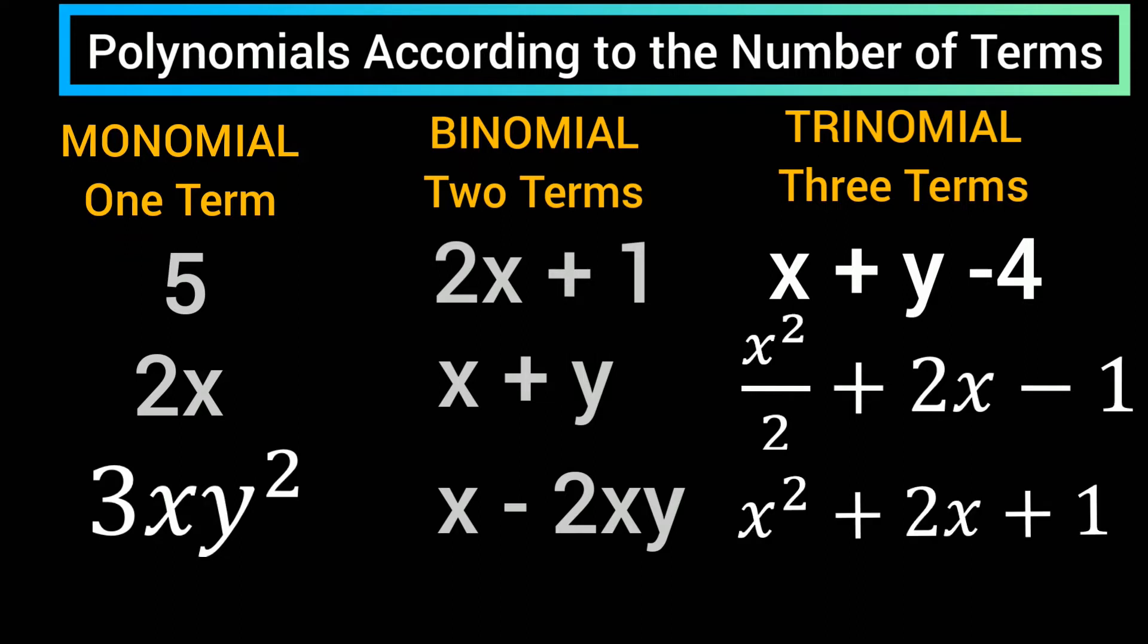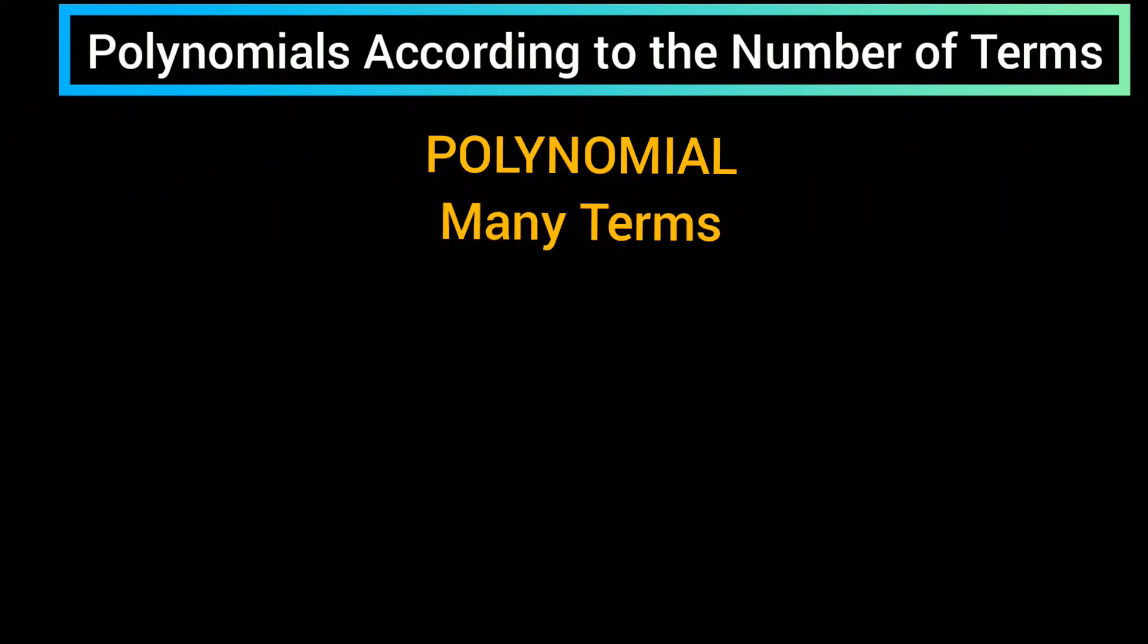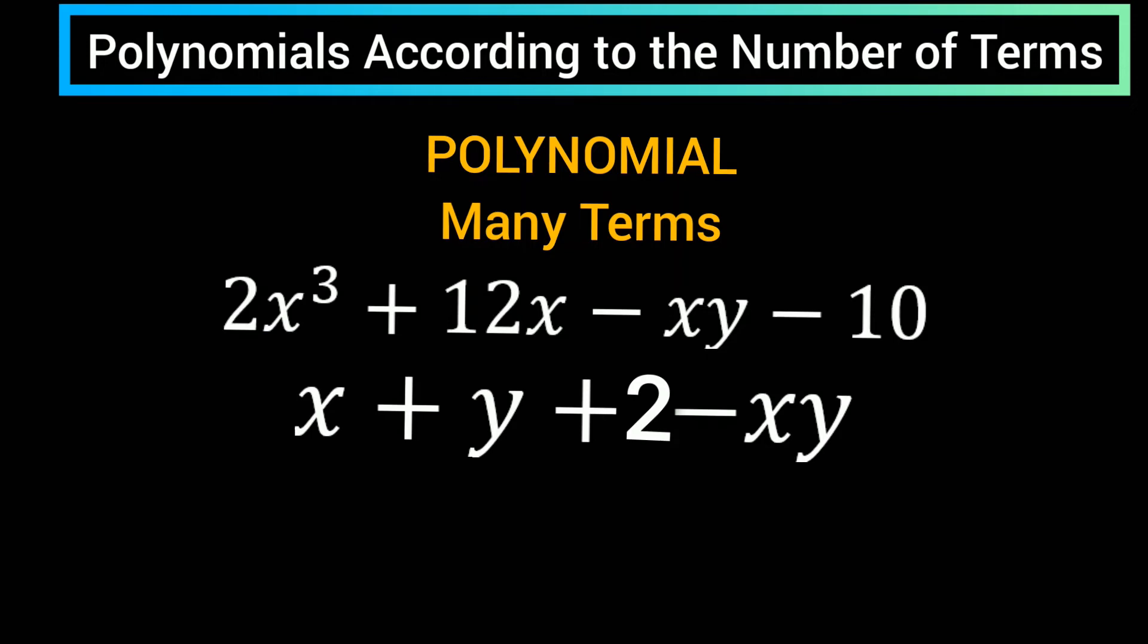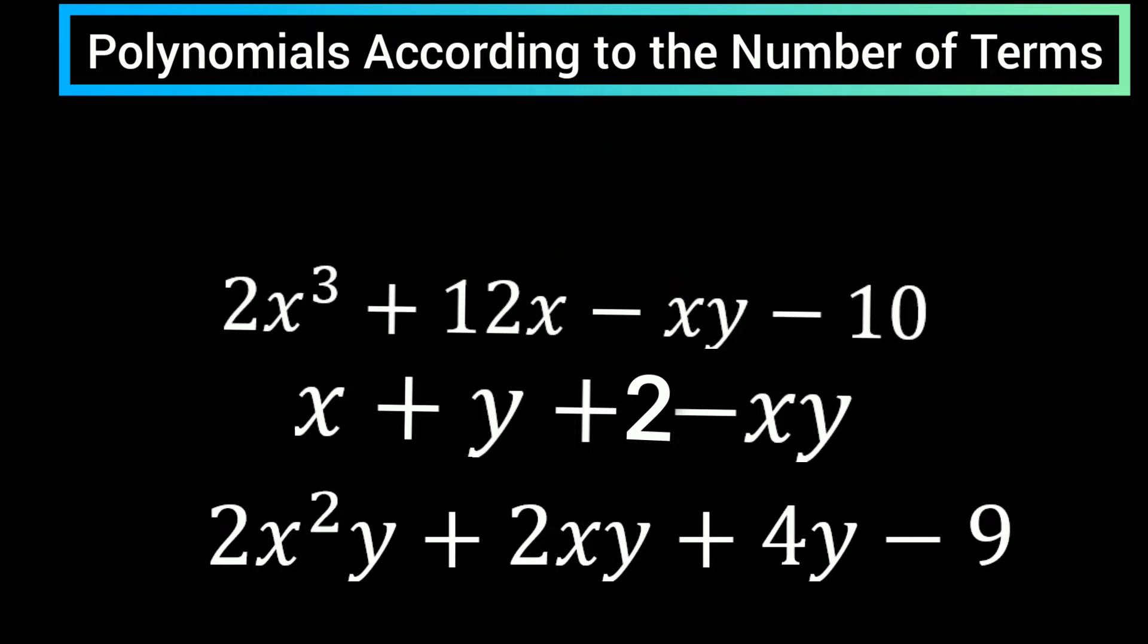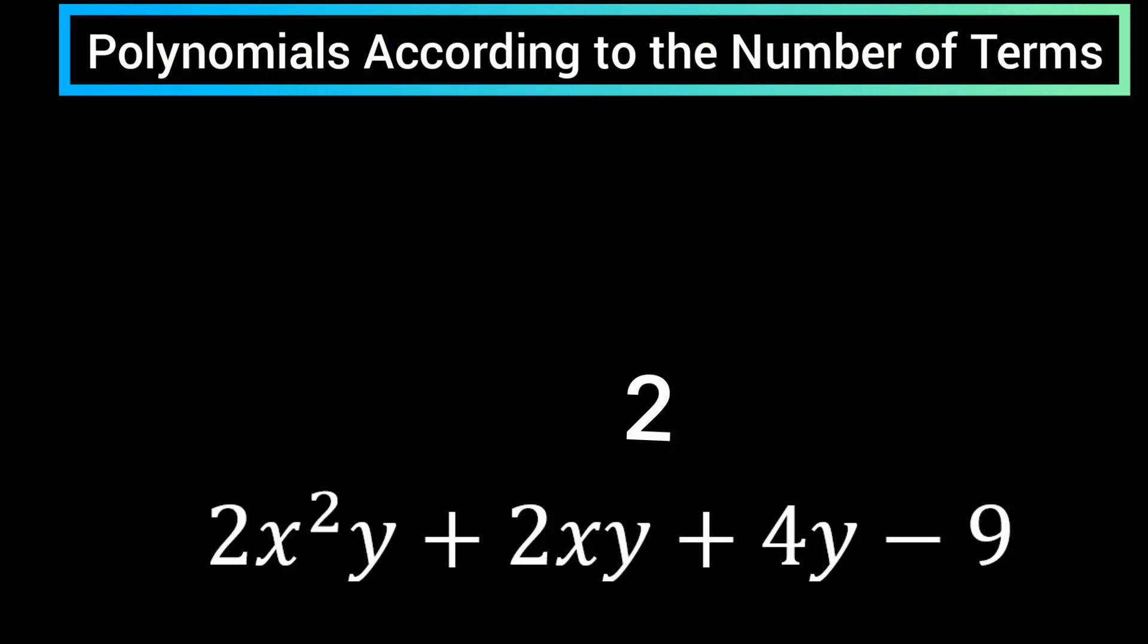x squared plus 2x plus 1. Polynomial: many terms. Examples: 2x cubed plus 12x minus xy minus 10, x plus y plus 2 minus xy, 2x squared y plus 2xy plus 4y minus 9.